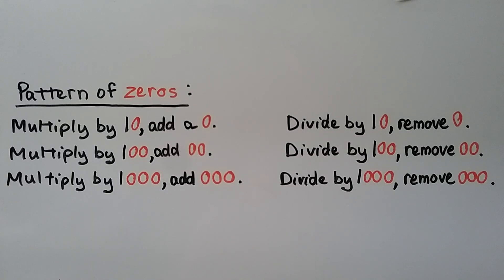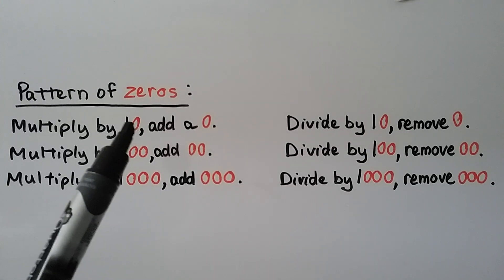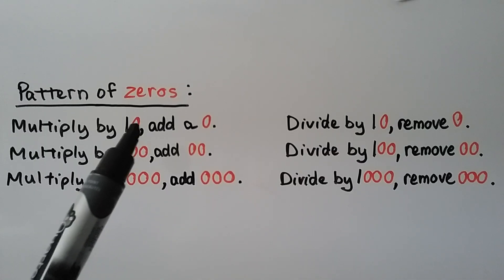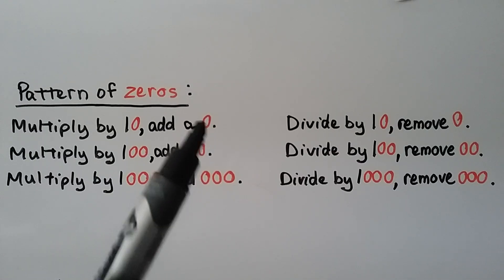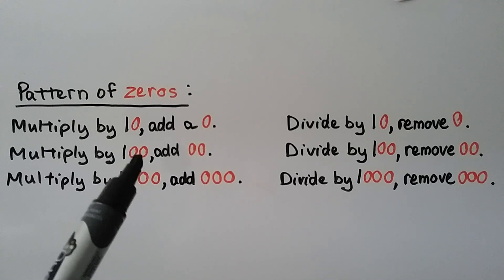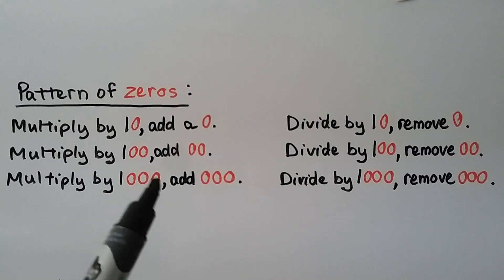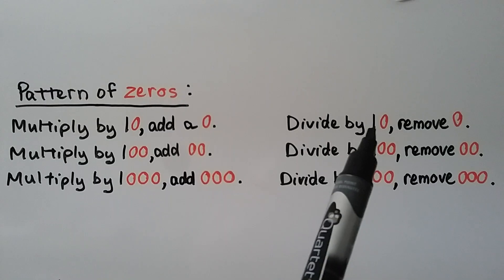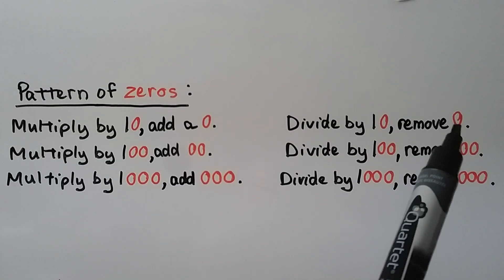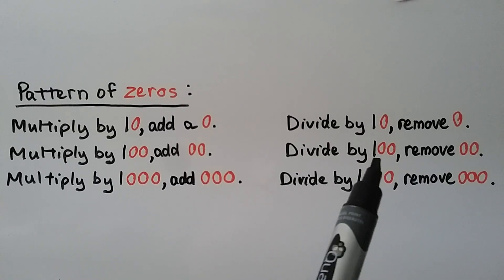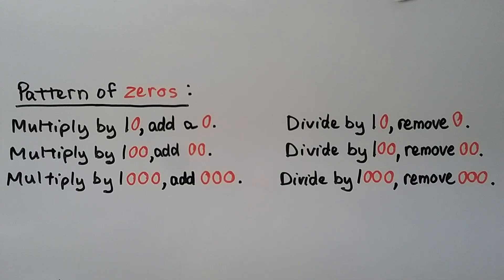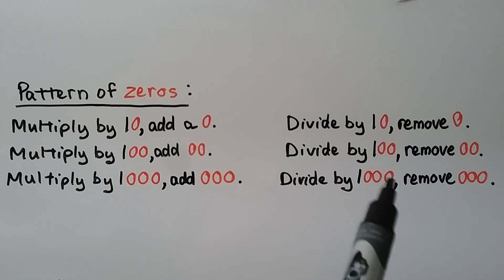We have a pattern of zeros. When we multiply by 10, it has one zero, so we add one zero to the number. When we multiply by 100, it has two zeros, so we add two zeros. When we multiply by 1,000, there are three zeros, so we add three zeros. When we divide by 10, it has one zero, so we remove one zero. When we divide by 100, we remove two zeros. When we divide by 1,000, we remove three zeros.